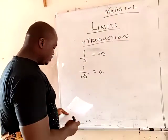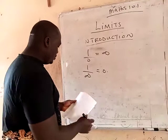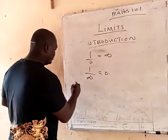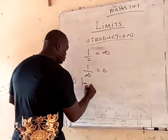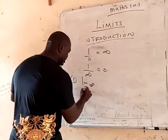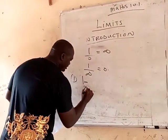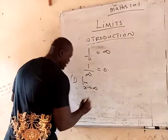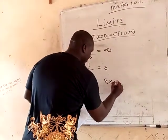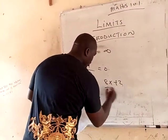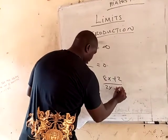For example, if you have a limit where x approaches infinity, and you have 8x plus 2, all over 2x plus 5.